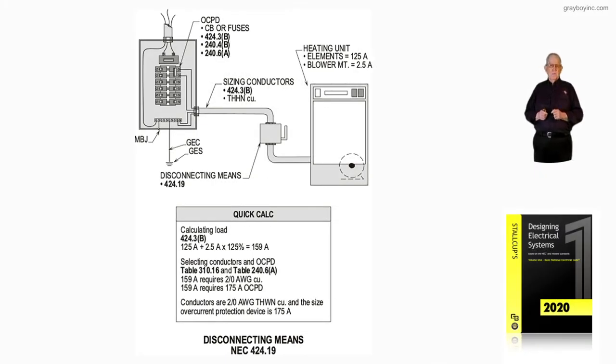Now, this illustration deals with the disconnecting means for a heating unit in accordance with NEC 424-19. And notice again, the disconnecting means is regulated to a heating unit in accordance with 424-19, but the 50-foot rule you wouldn't find here.